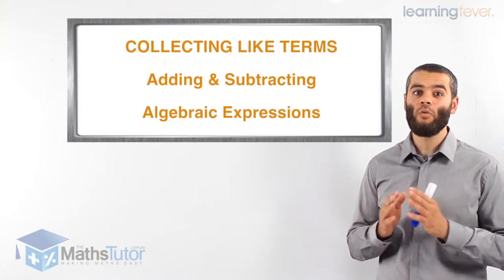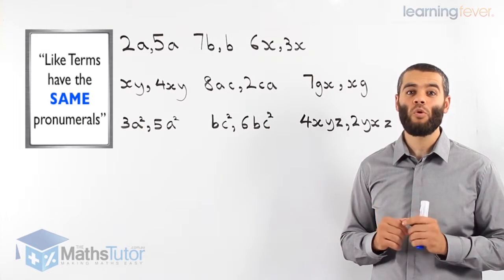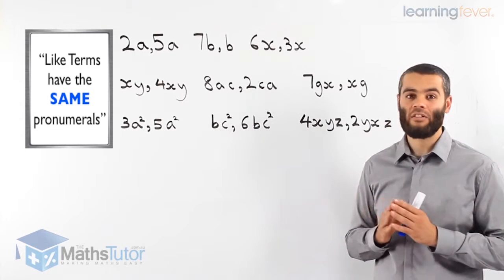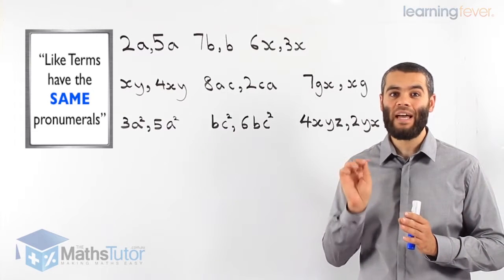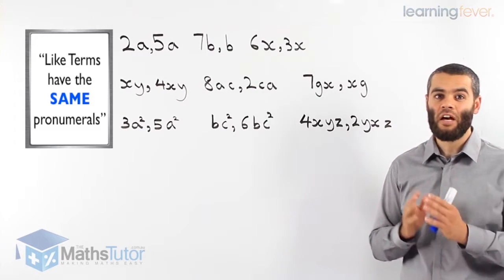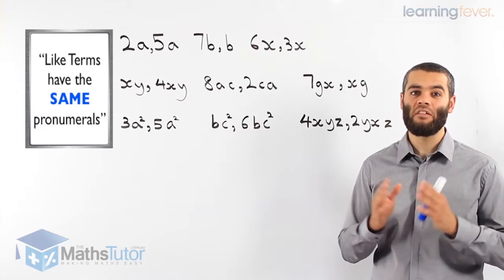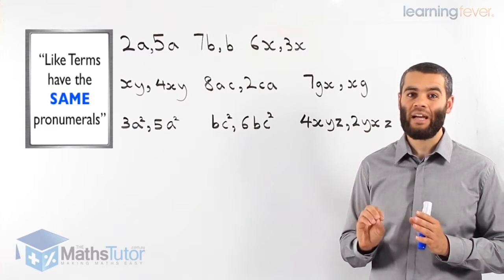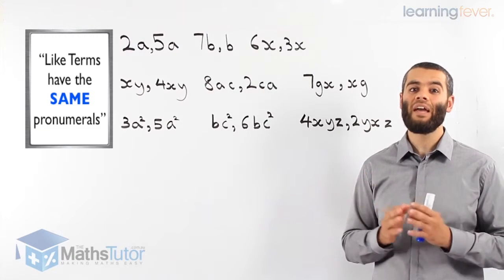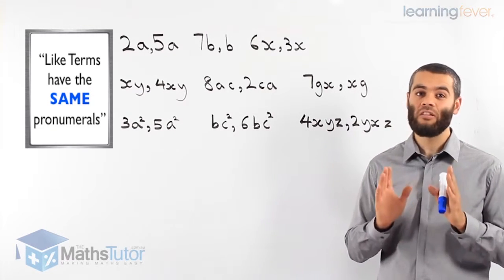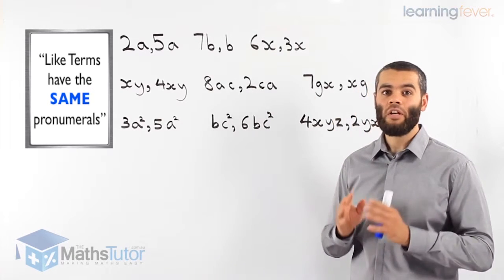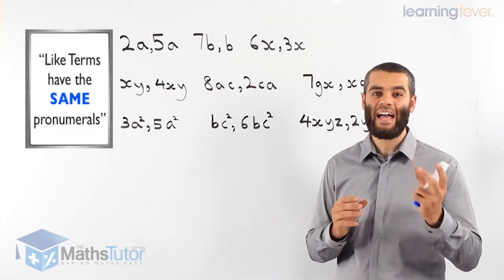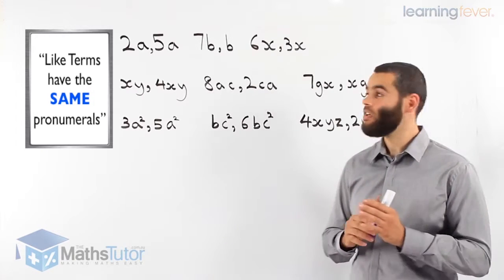We call them algebraic expressions. Before we start, we need to know something called like terms, because we can only add or subtract like terms. Very important concept. I've seen students get confused and start adding everything up and subtracting everything in algebra — no. You have to be careful, you can only add or subtract like terms. Now, what are like terms? Like terms meaning that the terms have the same pronumerals.